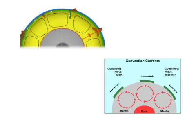Where two plates are being pushed towards each other, they collide and one is forced underneath the other. These movements, however, are very, very slow — only around two and a half centimetres per year. It has taken around 200 million years for the continents to be in their current positions.